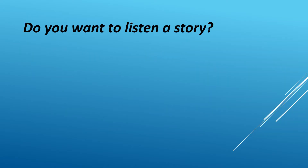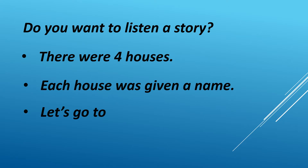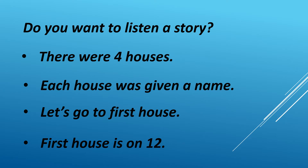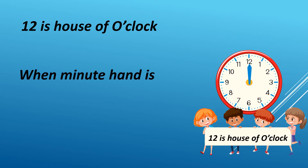Do you want to listen to a story? There were four houses and each house was given a name. Let's go to the first house. The first house is on 12. 12 is the house of O'clock. Twelve members were there in that family and the name of the house was O'clock. When the minute hand is on 12, we always say O'clock.